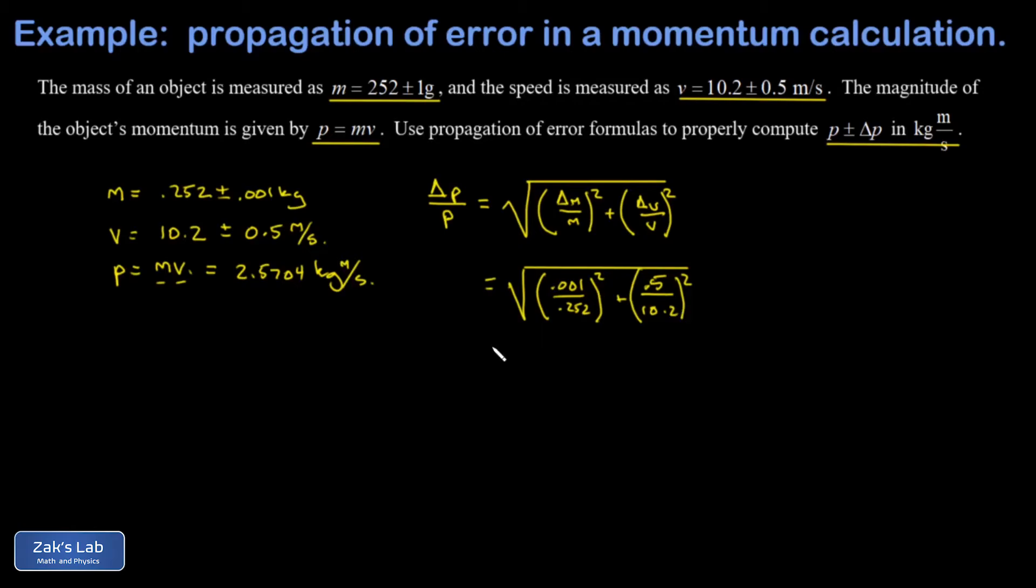Plug the numbers into that, smash it into a calculator, and we get 0.04918, and there are no units on that. It's basically telling us there's a five percent uncertainty in the momentum. Then to get delta p itself, we have to move this p over to the other side of the equation.